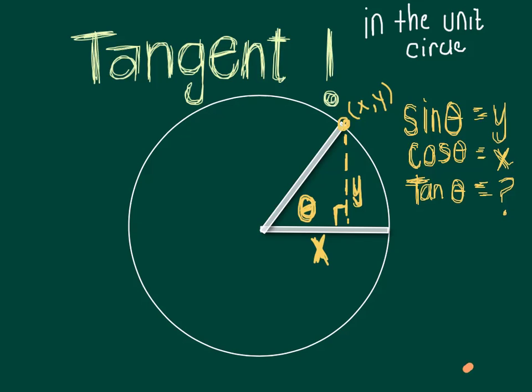This video is going to show us where tangent is in the unit circle. We've already seen that the sine of an angle is given by the y value of the spot where the angle hits the unit circle.